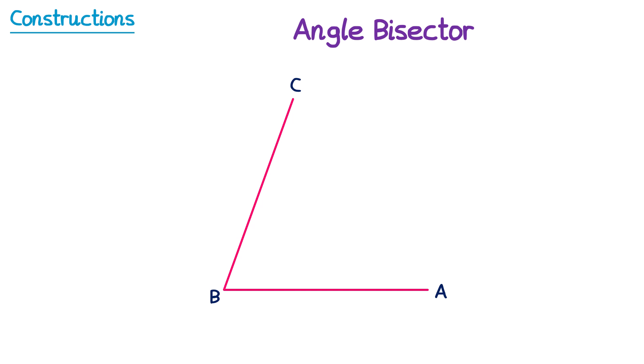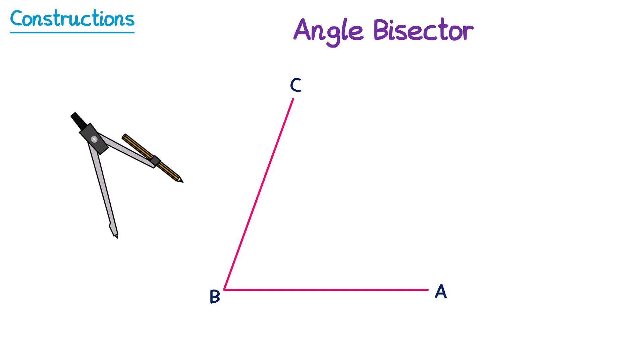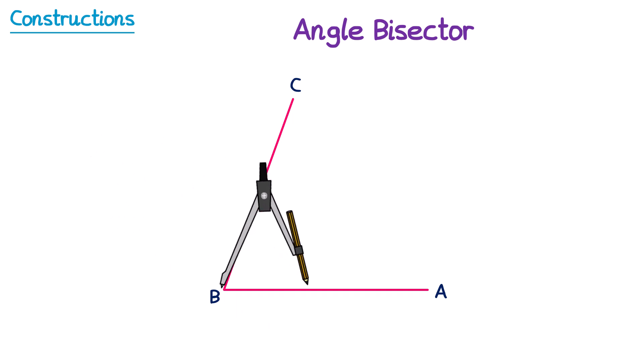When we construct this, we're only allowed to use a pair of compasses and a ruler, so no protractor for this question. To construct an angle bisector, we start by taking a pair of compasses. We place the sharp point of the pair of compasses at the point of the angle, so down here at point B.